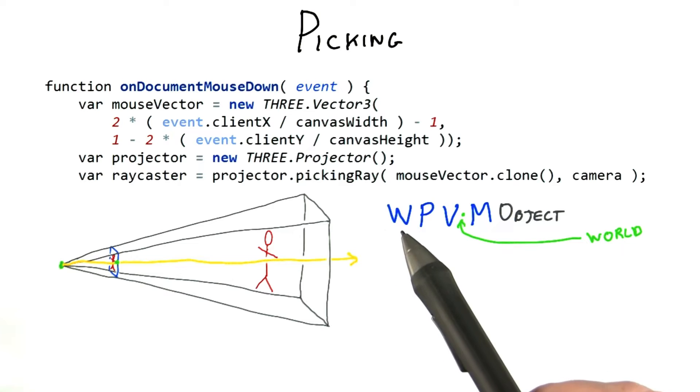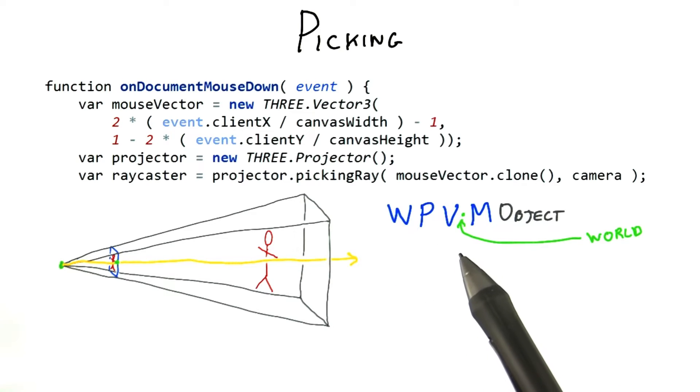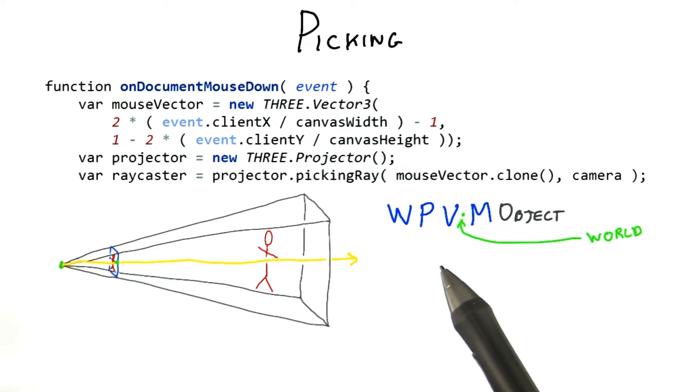The chain goes from window coordinates, to normalized device coordinates, to view, to world coordinates. Happily, Three.js makes this easy.